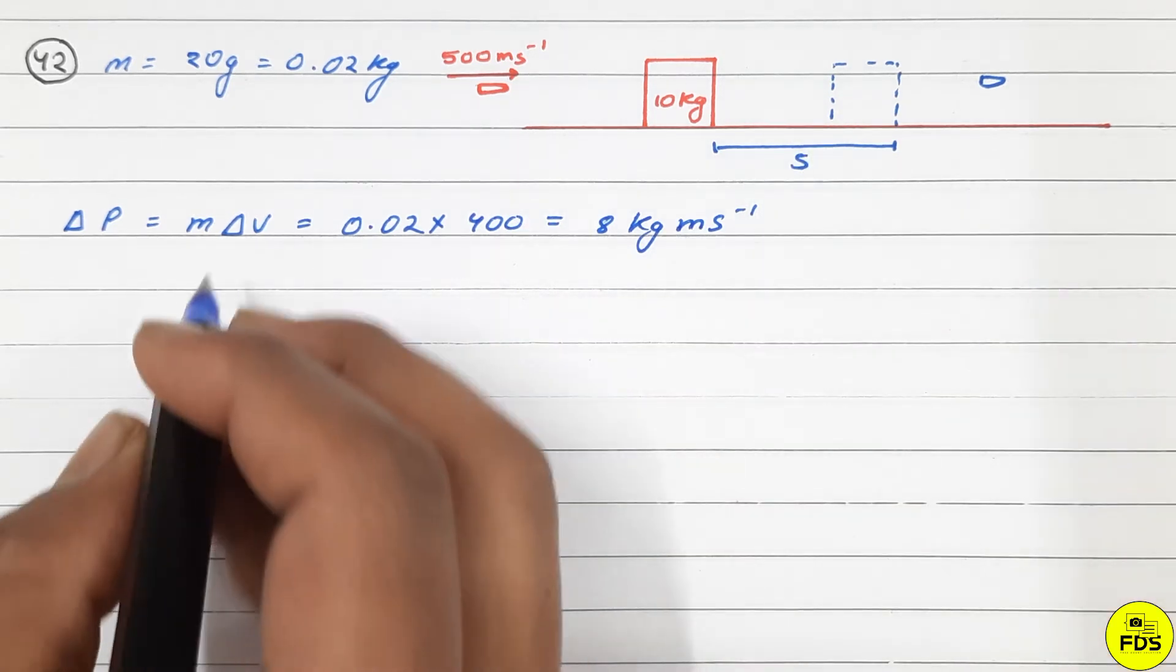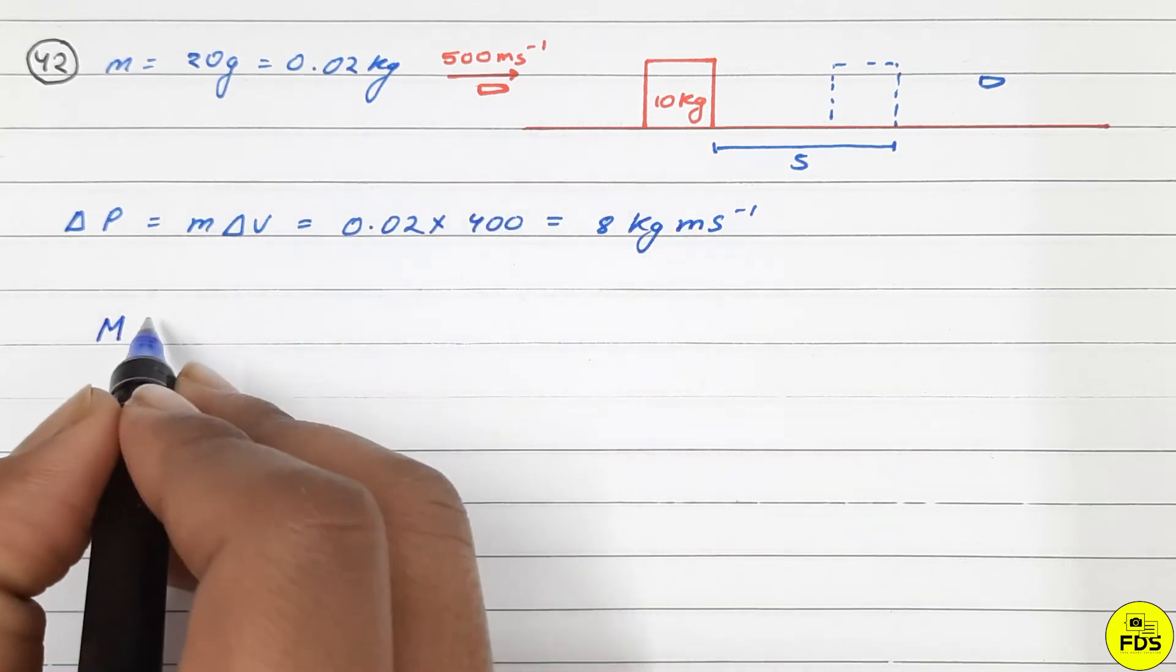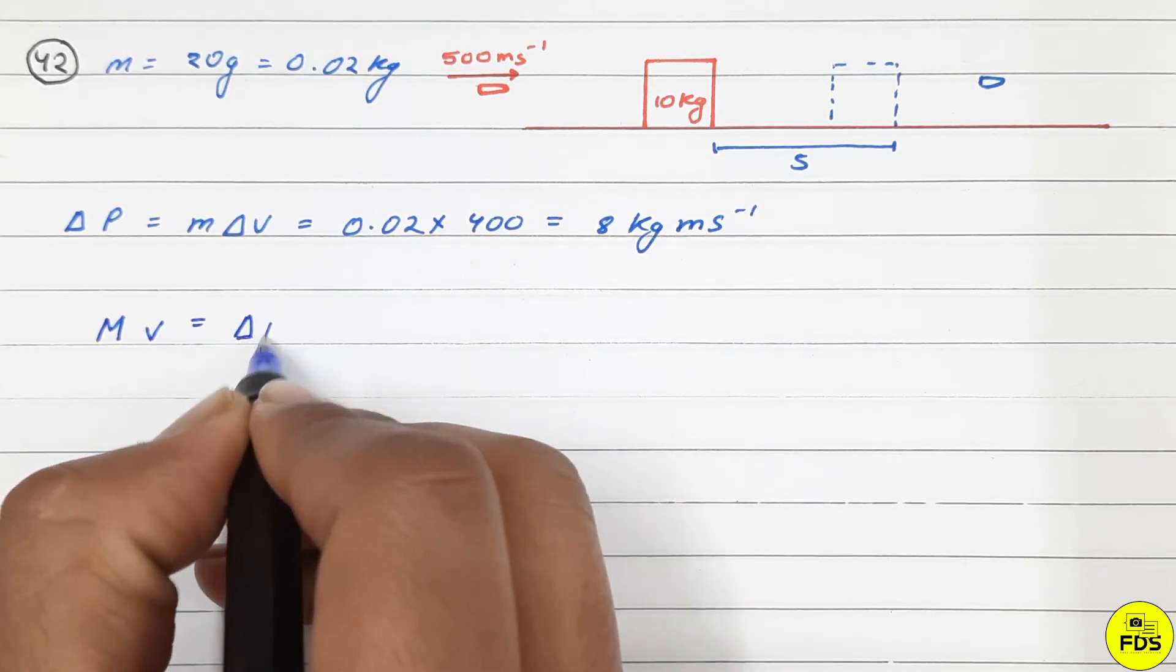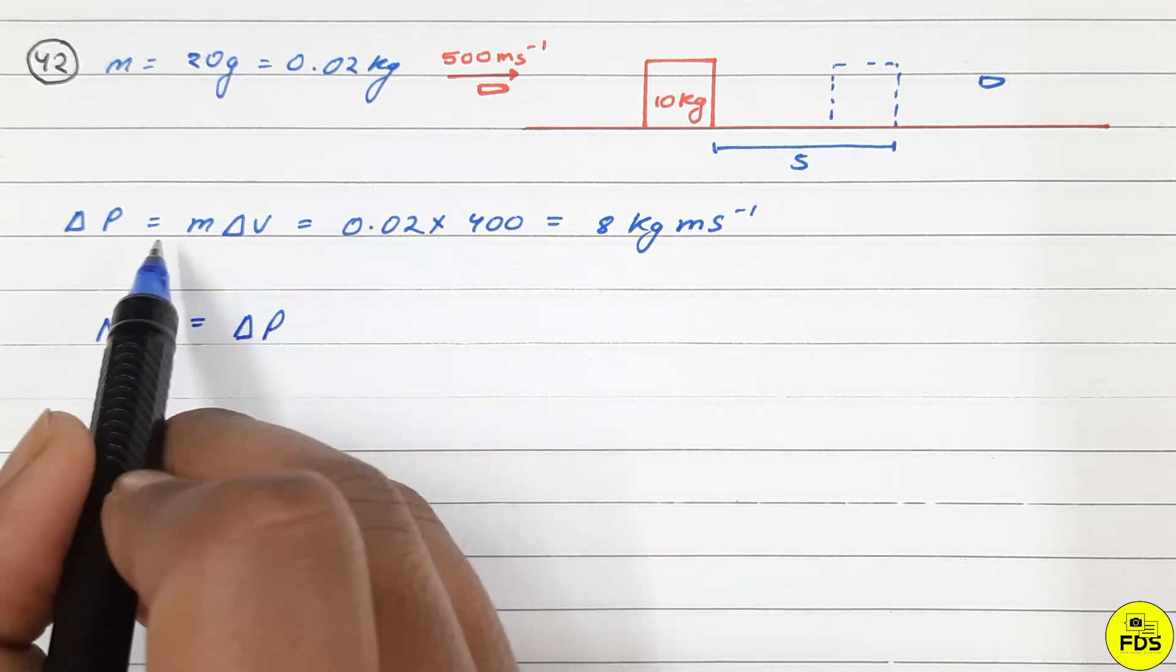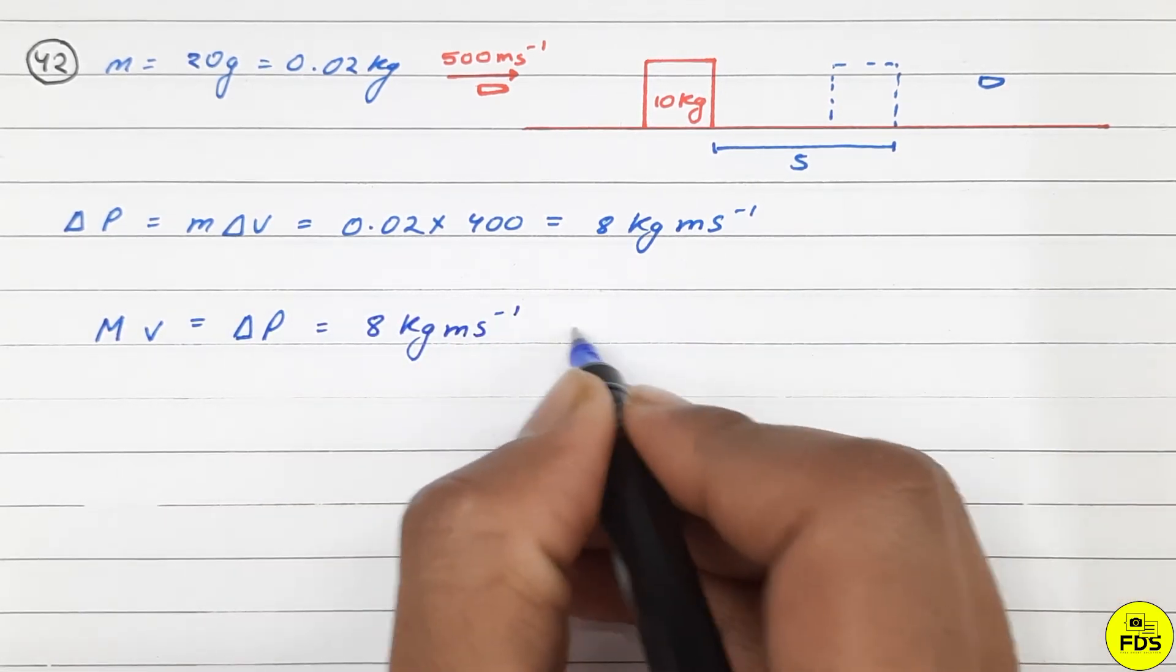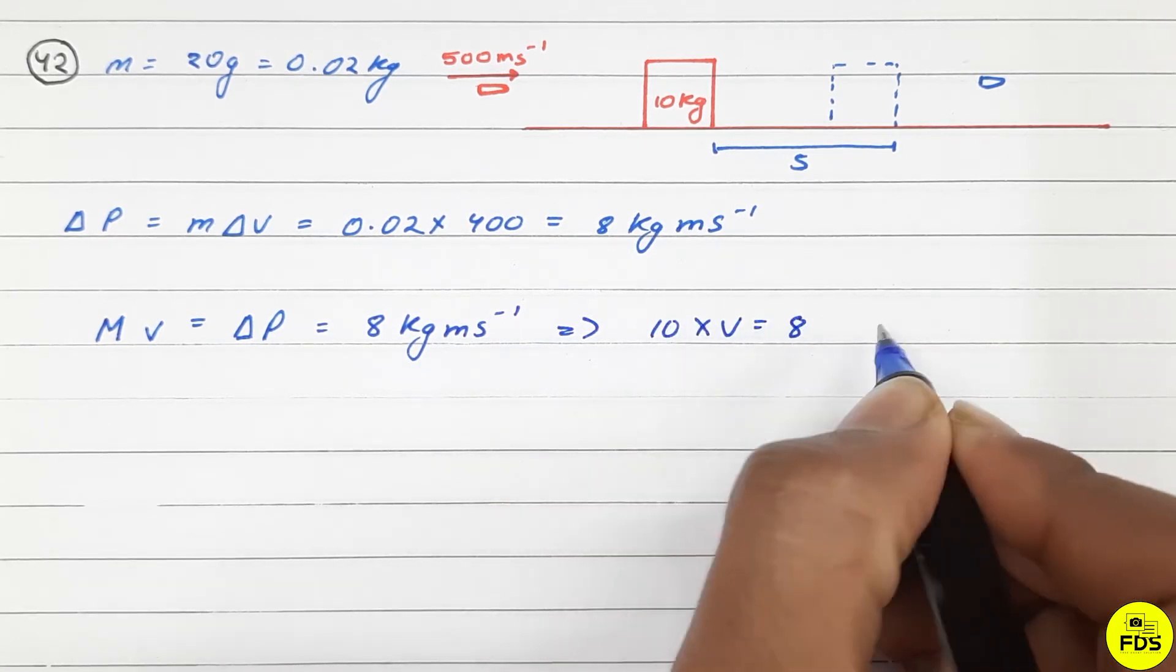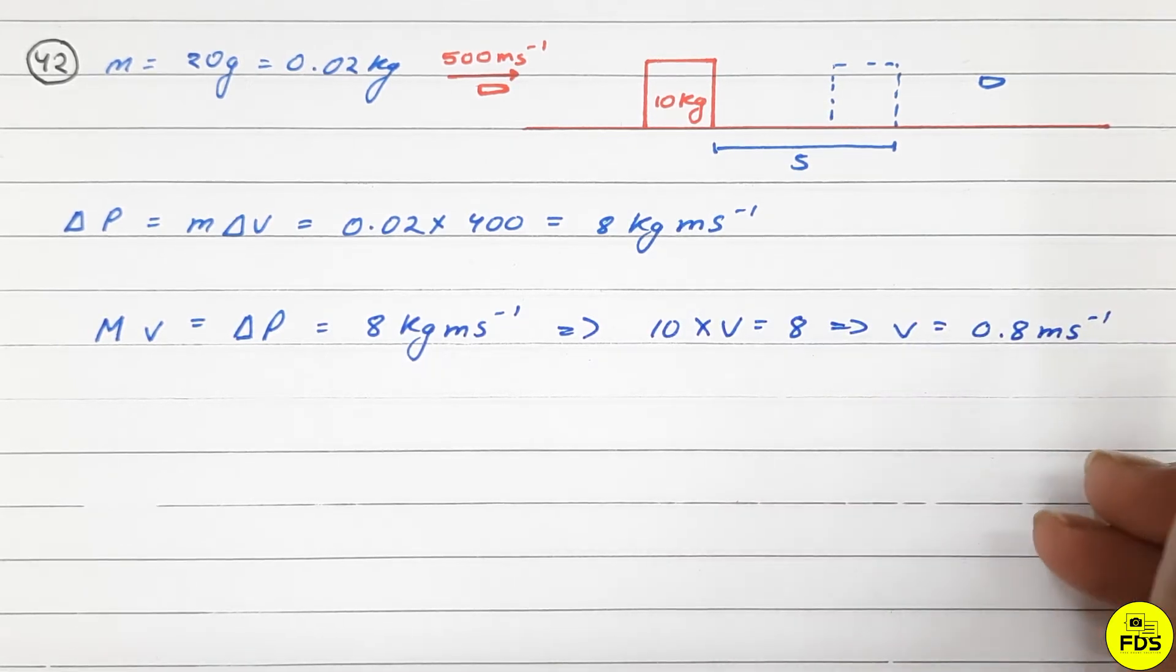The momentum of the block is capital M times v, where M is the mass of the block. This equals 8 kg·m/s. So 10 times v equals 8, giving v equals 0.8 meters per second.